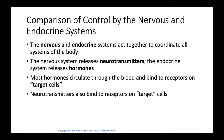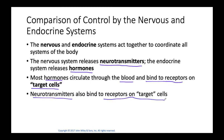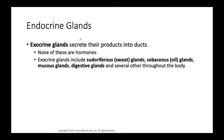Together, these two systems coordinate all of the bodily functions. The neural system releases neurotransmitters whereas the endocrine system releases hormones. Both of these circulate through the blood and bind to receptors on target cells — this holds true for both hormones and neurotransmitters.